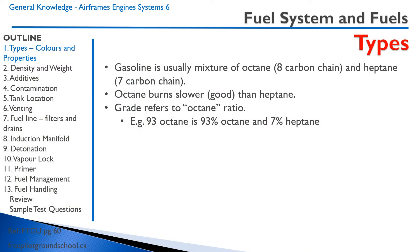Let's talk about some different types of fuels. Gasoline is a mixture of octane and heptane. Octane is an 8-carbon chain. Heptane is a 7-carbon chain. Octane burns slower than heptane, which is a good thing — it's less volatile. The grade refers to the octane ratio.